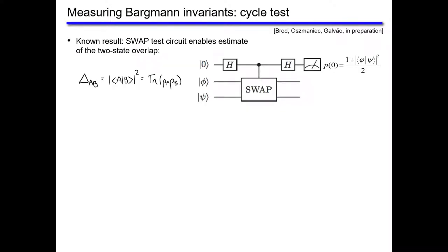We've known how to measure overlaps for 25–30 years using the swap test. You have two states and an ancilla qubit, apply a controlled-SWAP (Fredkin gate), a Hadamard on the ancilla, and measure. The probability of measuring zero is (1 + overlap)/2, where the overlap for mixed states is Tr(ρ₁ρ₂). So the swap test is already a circuit that measures 2-vertex invariants.